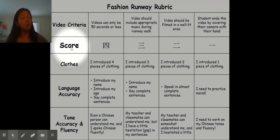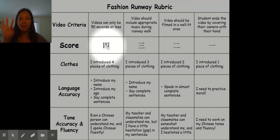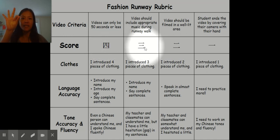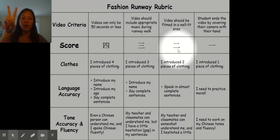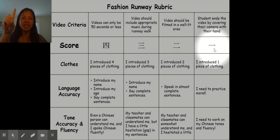Your video will be scored on either 四 — four points, 三 — three points, 二 — two points, or 一 — meaning you've got to work on this some more.